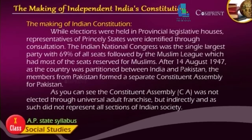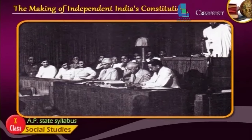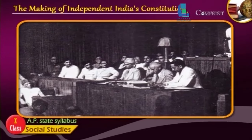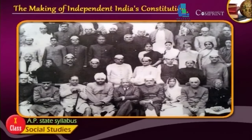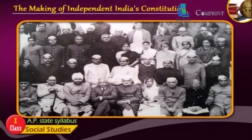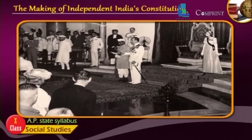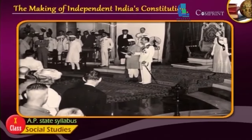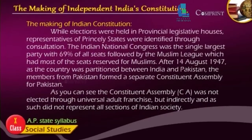While elections were held in provincial legislatures, representatives of princely states were identified through consultation. The Indian National Congress was the singularly largest party with 69% of all seats, followed by the Muslim League which had most of the seats reserved for Muslims. After 14 August 1947, as the country was partitioned between India and Pakistan, the members from Pakistan formed a separate Constituent Assembly for Pakistan.